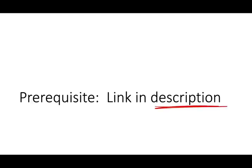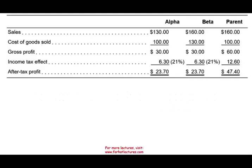What would be helpful before you start this session is to look in the description and review the prior session, because this session is an extension of it. In the prior session, we looked at two companies — two subsidiaries, Alpha and Beta — that belong to the same parent company. Alpha sells to Beta, and Beta sells to the consumer. Alpha sells DVD players to Beta for $130, and the cost of Alpha is $100, giving Alpha a profit of $30.